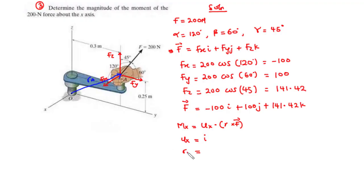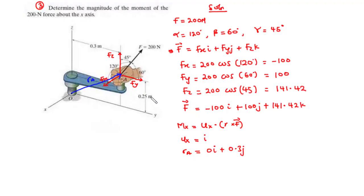Let's find the position vector r_a. We are going to move some distance along the y-axis and some distance along the z-axis. Moving away from point O along the y-axis, we have a positive value of 0.3. So we have 0i for the x-component, plus 0.3j for the y-component, and moving along the z-axis by 0.25 meters gives plus 0.25k. This is the position vector r_a.